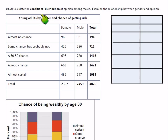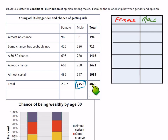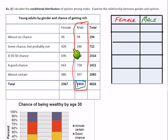Example two: calculate the conditional distribution of opinion among males, and examine the relationship between gender and opinion. For this conditional distribution, I'm only going to look at males — that's the condition. We'll look at how different opinions are distributed over just the males, then do the same for females so we can compare the two distributions.